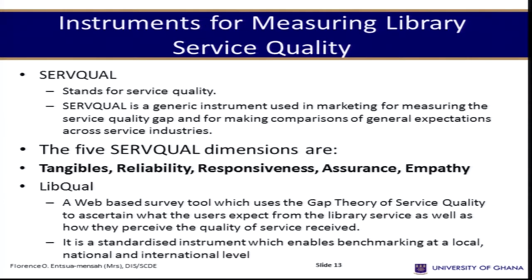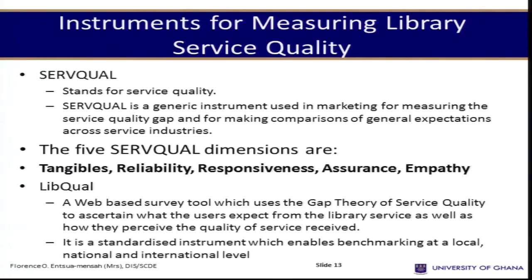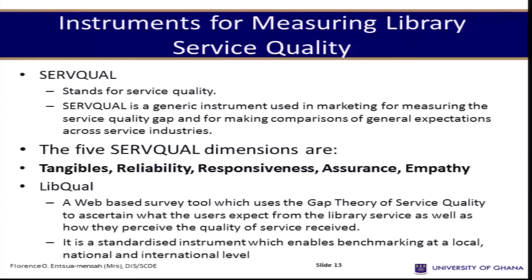Tangibles refer to the appearance of physical facilities, equipment, personnel, and consumer materials. Reliability is the ability to perform the promised service accurately. Responsiveness is the willingness to help customers and provide prompt services. Assurance is the knowledge and courtesy of employees and the ability to convey trust and confidence.